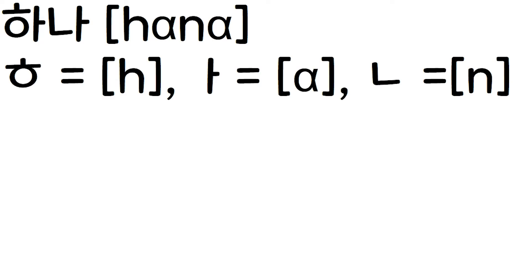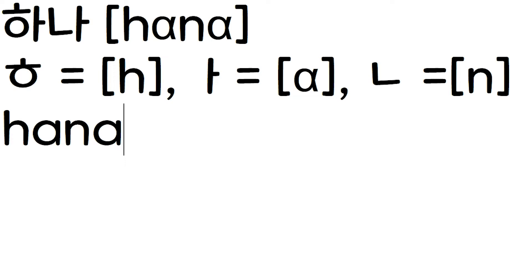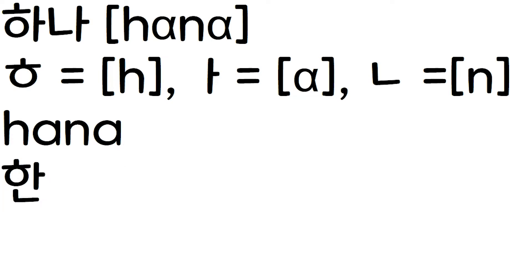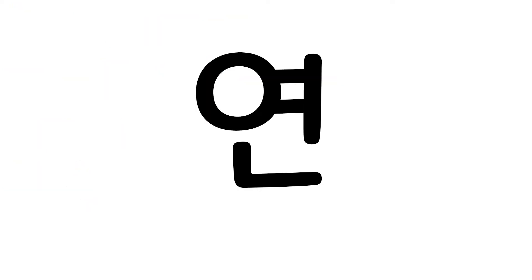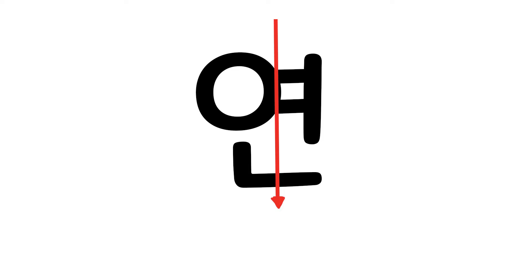Here is a Korean word and the same sound written in English alphabet. Hyut sounds like H, A sounds like A, D sounds like N. As you type H-A-N-A to type HANA, you'll do the same for Korean characters. Basically, the order of typing is left to right, top to bottom.